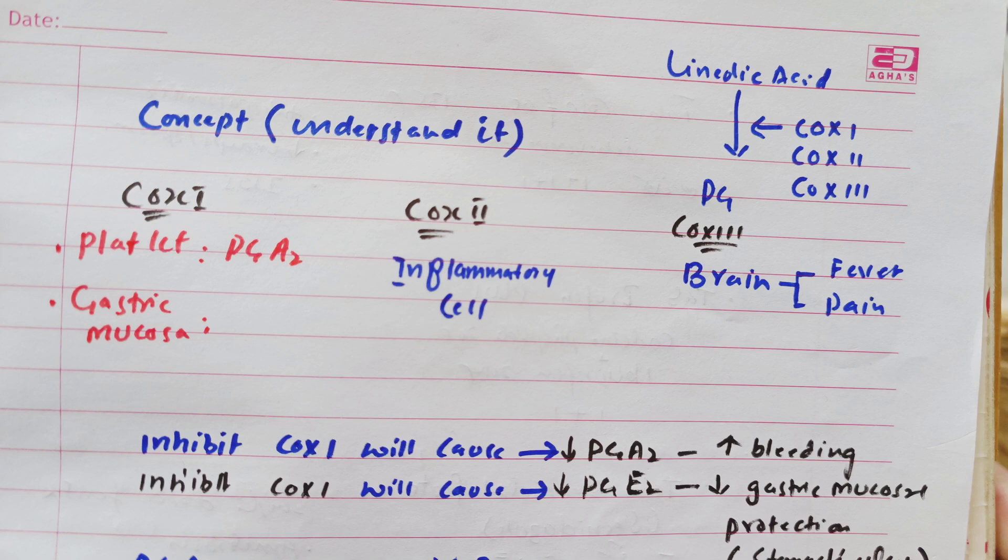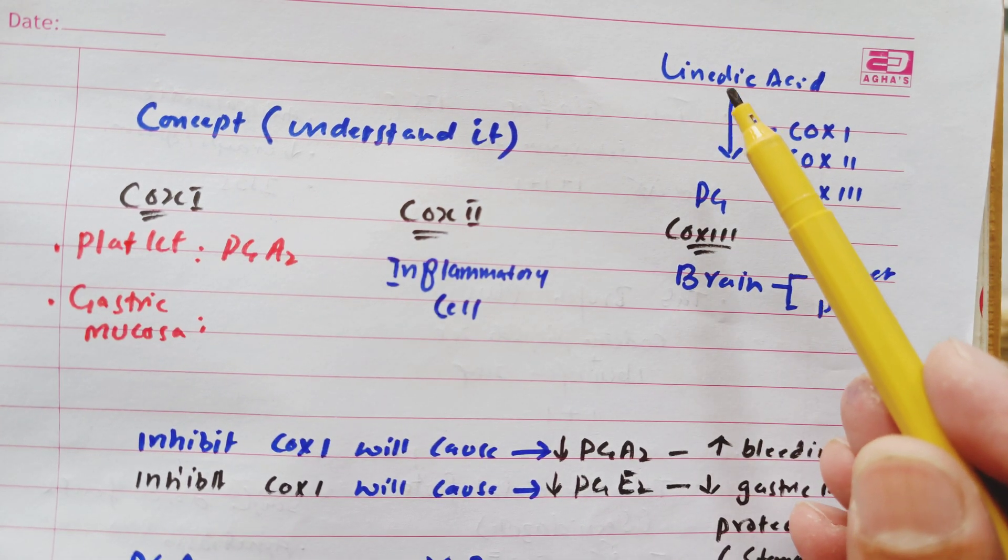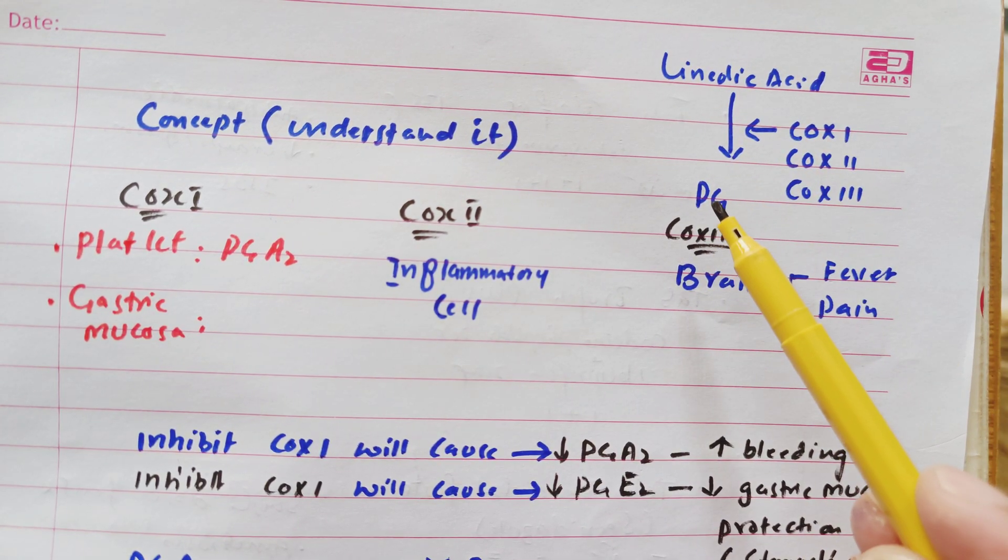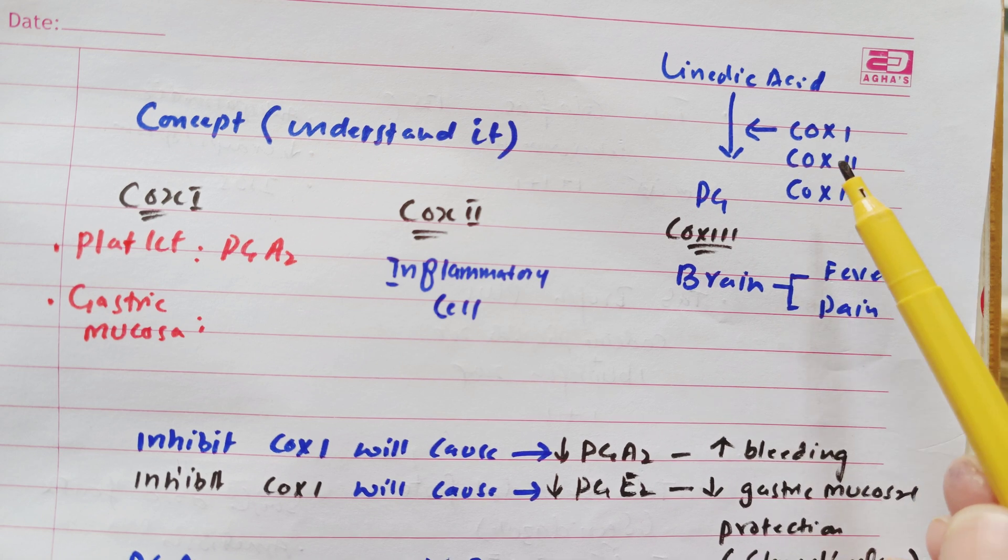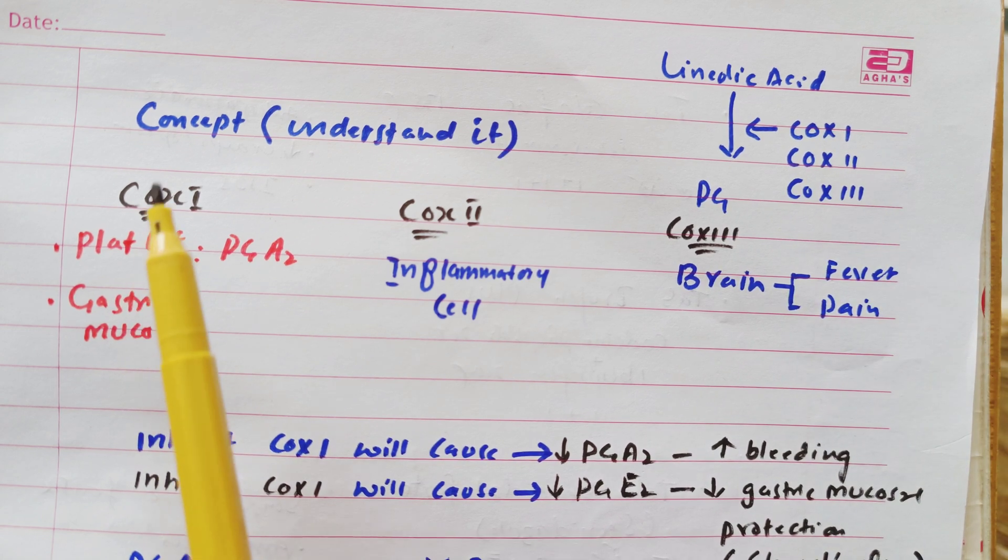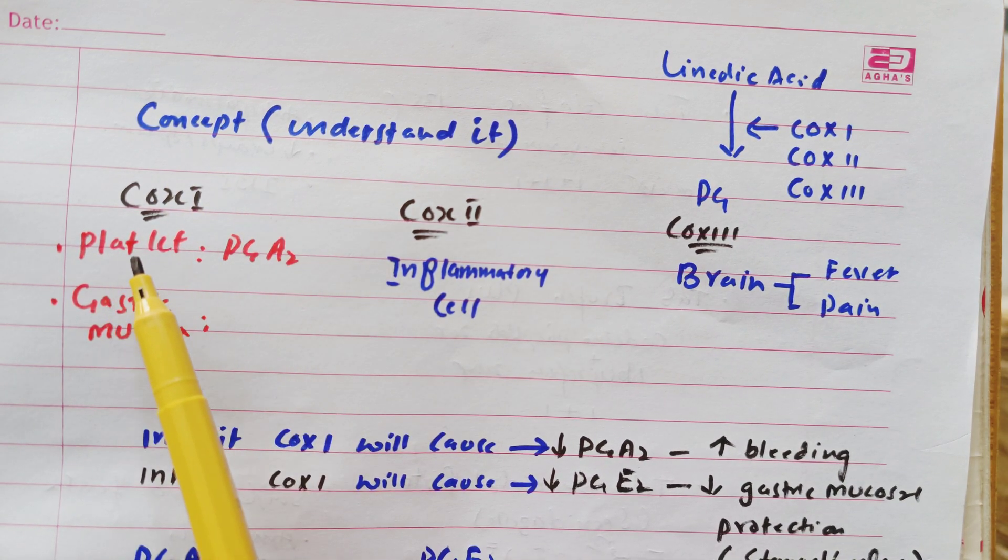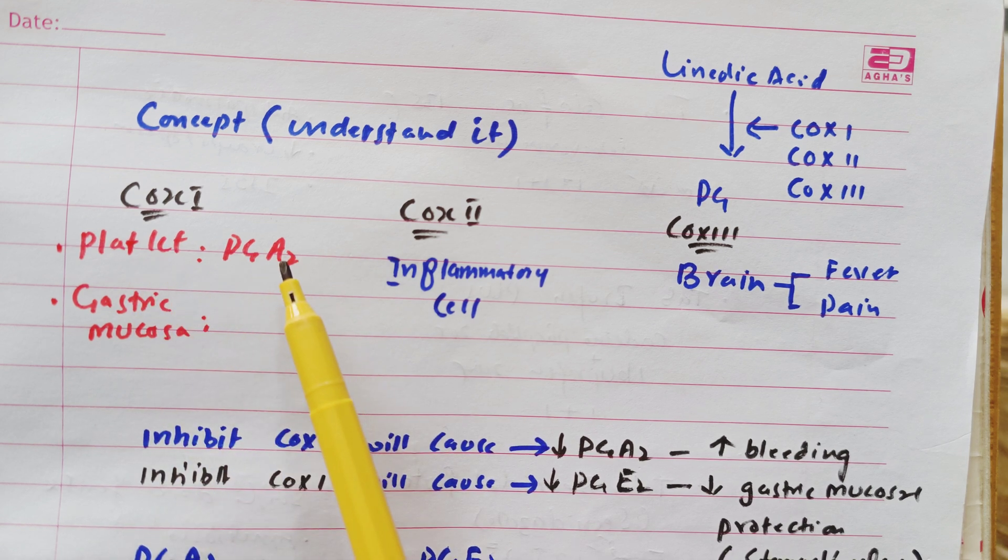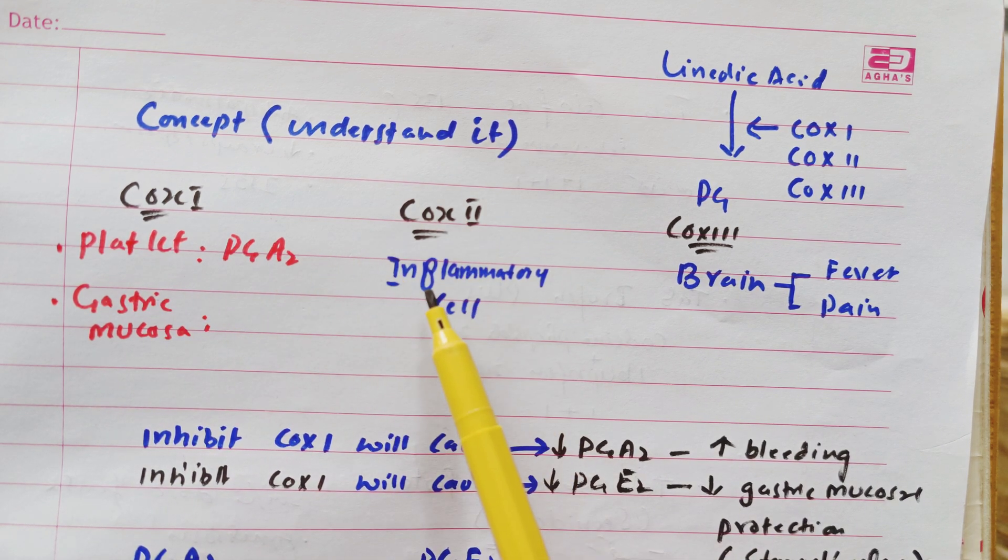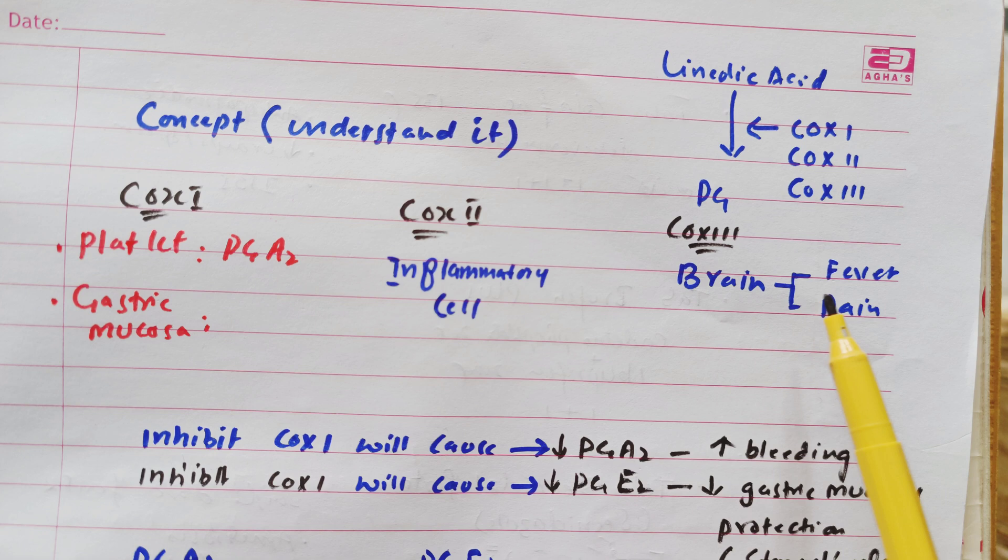You see the linoleic acid or phospholipid in the cell membrane is going to convert into prostaglandin with the help of enzyme COX-1, COX-2, and COX-3. Now the COX-1 is present in the platelet and GIT gastrointestinal system. The COX-2 is present in inflammatory cells. The COX-3 is present in the brain.